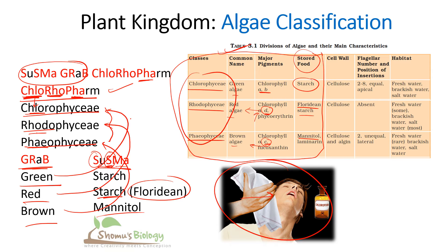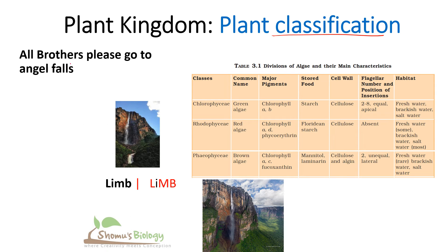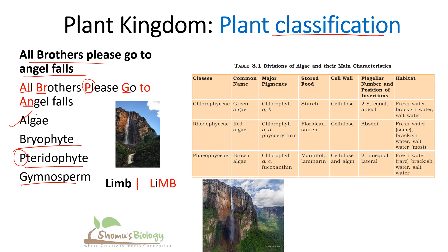Now let's look at plant kingdom classification overall. The sentence to remember is: 'All brothers please go to Angel Falls.' A for algae, Br for bryophyte, P for pteridophyte, G for gymnosperm, and An for angiosperm. This sequence is very important — algae come first and angiosperm comes last, reflecting the evolutionary classification order.